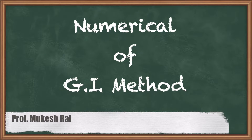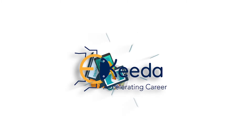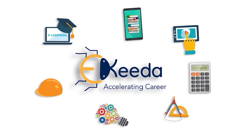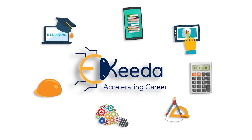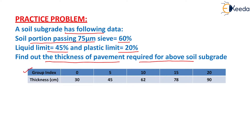Hello students, today we are going to solve a numerical using the group index method. The question is given as: a soil subgrade has the following data — soil portion passing 75 micrometer sieve is equal to 60%, liquid limit is equal to 45%, and plastic limit is equal to 20%. Find out the thickness of pavement required for the above soil subgrade, if the thickness and group index value is given in the table.